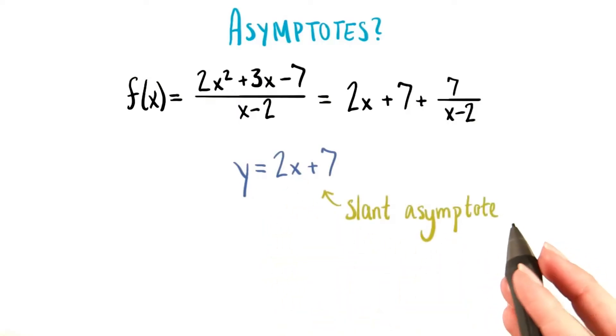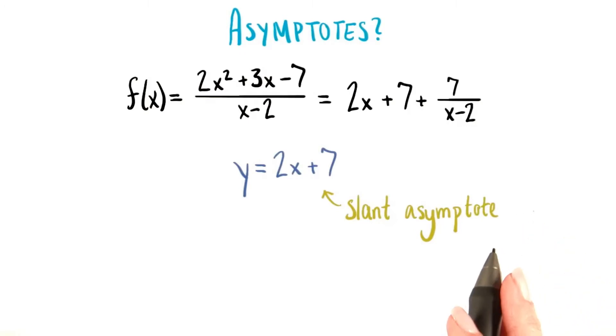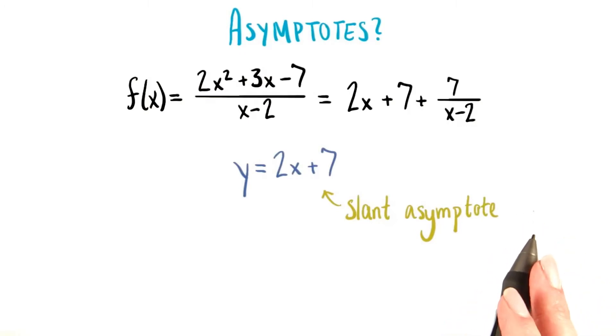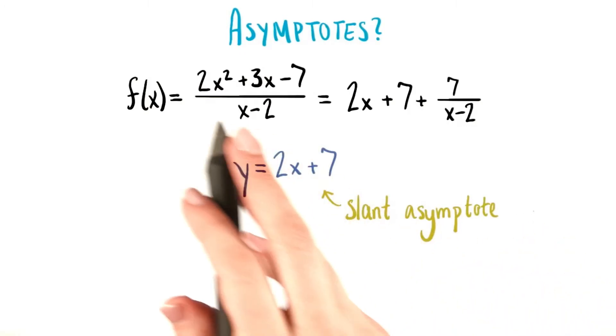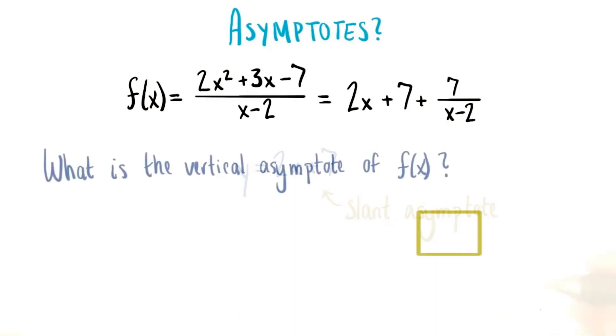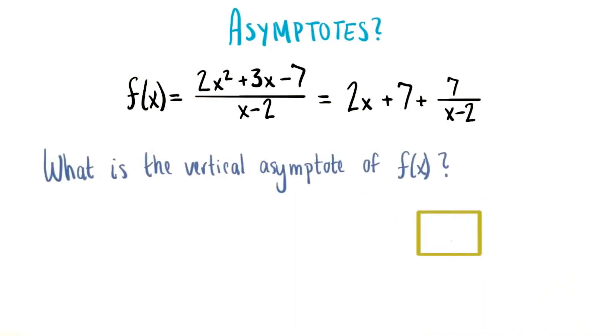We'll see in a second how this shows up on our graph, but first, I'd like for us to find the vertical asymptote for this function. Please write its equation in this box.